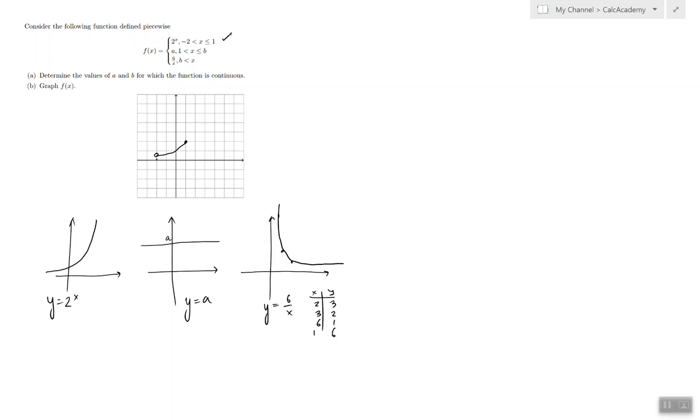Now, the next piece is just a constant function. So, if I wanted to connect with my first piece, I have to set a equal 2. Otherwise, it's just going to completely miss this point. So, that means a, this value, is equal 2.